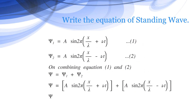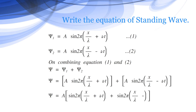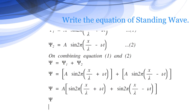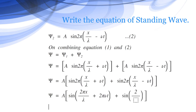Taking A out of the bracket, the equation becomes psi equals A times [sin(2pi x / lambda + nu t) + sin(2pi x / lambda - nu t)], which can also be written as psi equals A times [sin(2pi x / lambda + 2pi nu t) + sin(2pi x / lambda - 2pi nu t)].